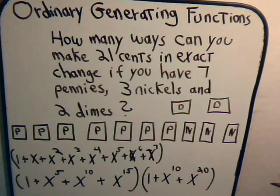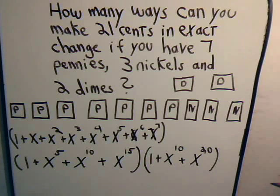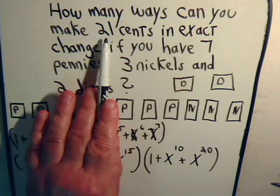Now if we want to ask ourselves, what's the number of ways that we can choose the pennies and the nickels and the dimes so that we have a total of 21 cents, or the equivalent of 21 pennies?